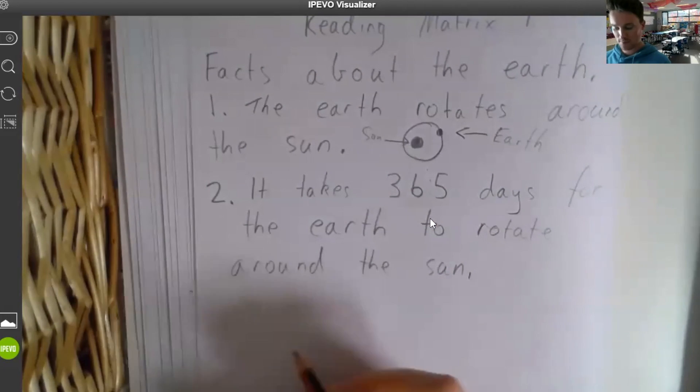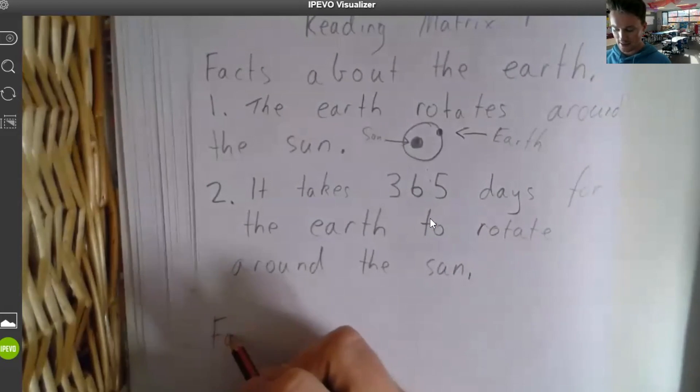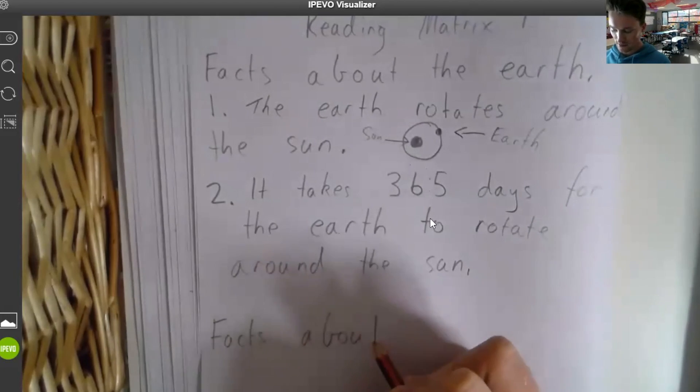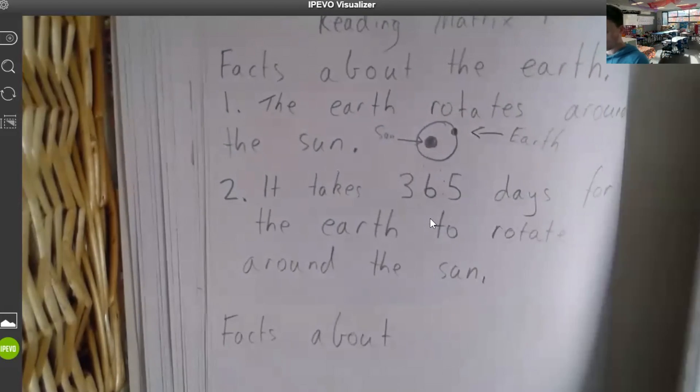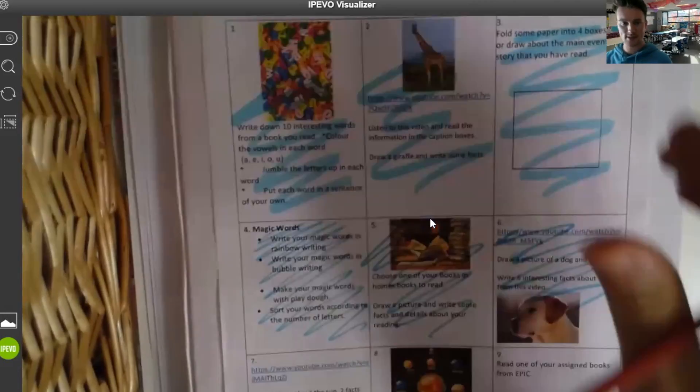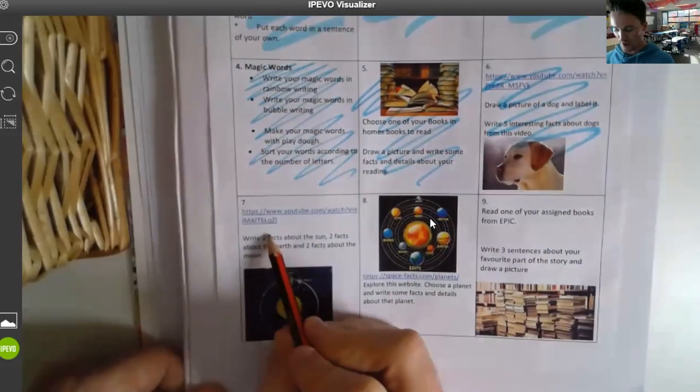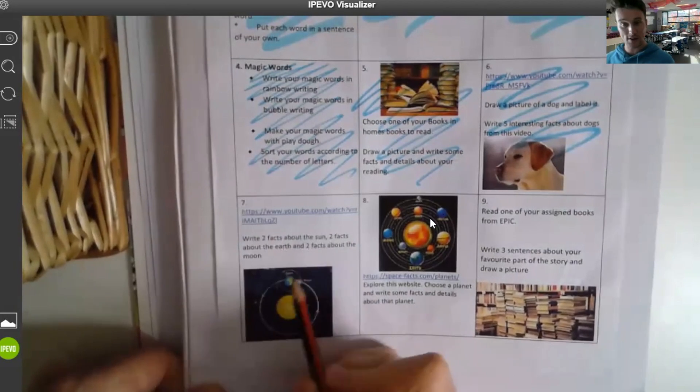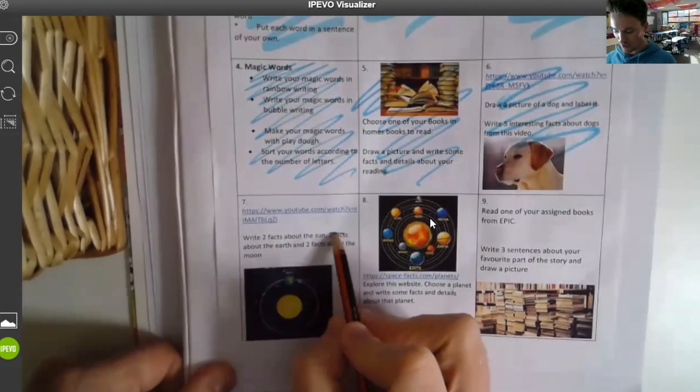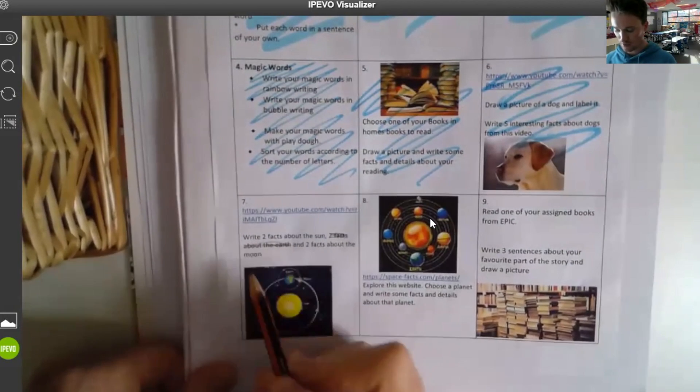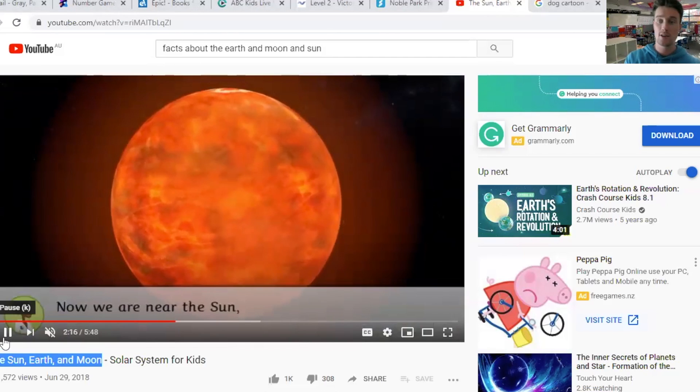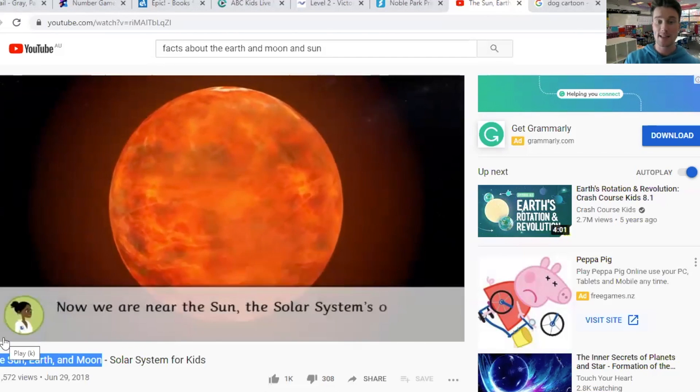So next, maybe leave a bit of a space and you want to write down next facts about. Now let's have a look. All right, well, the book is wanting us to write down two facts about the sun, two facts about the earth, and two facts about the moon. Well, you can even cross out if you want the facts about the earth because we've already done that. So now we need to look at facts about the sun and facts about the moon. Okay. So if we have a look at the video, the next thing it says,